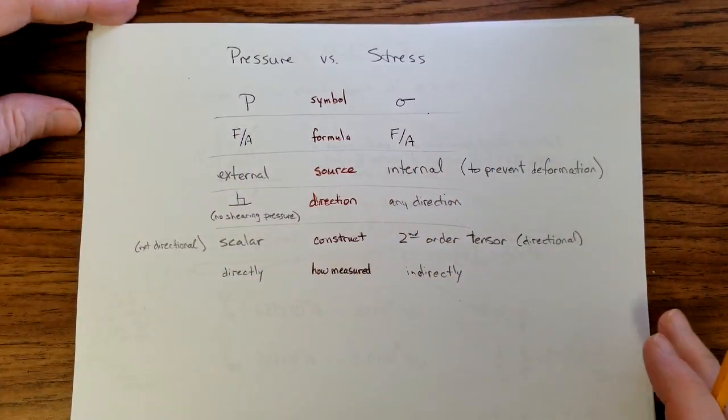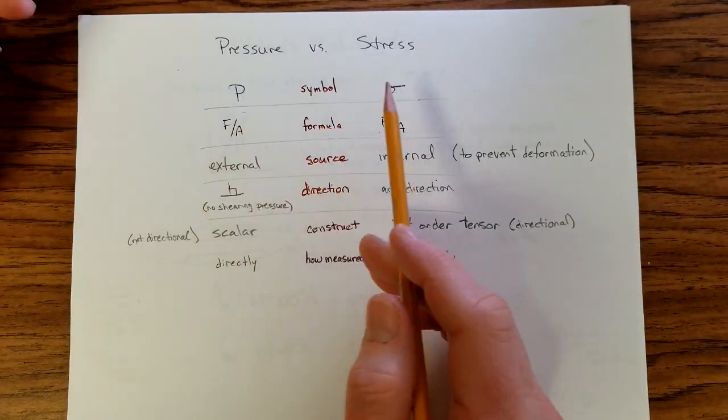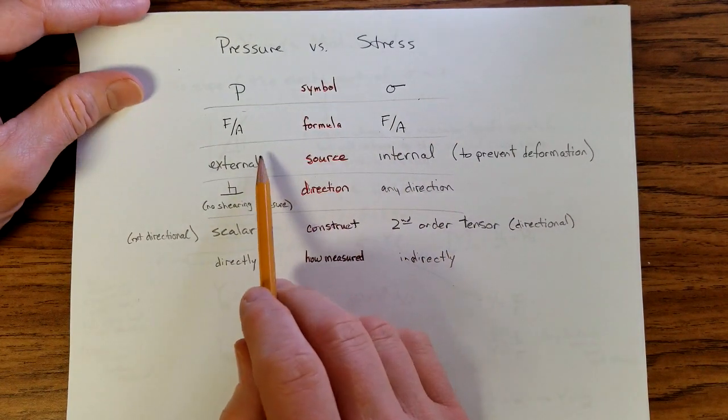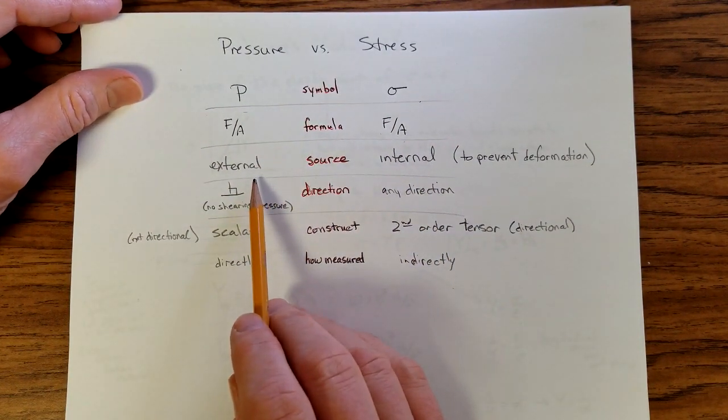Both the formulas are force divided by area. The symbols are different, so that should give you some hint that there's some reason for difference, although that doesn't always work that way.